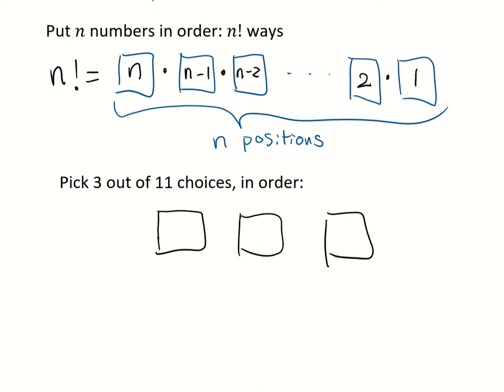And we have 11 choices. That means for the first position, we have 11 choices. And the second position, we only have 10 choices because 1 is taken from the first position. And the third position, we only have 9 choices because the first 2 are taken. So all together, we have 11 times 10 times 9 ways.